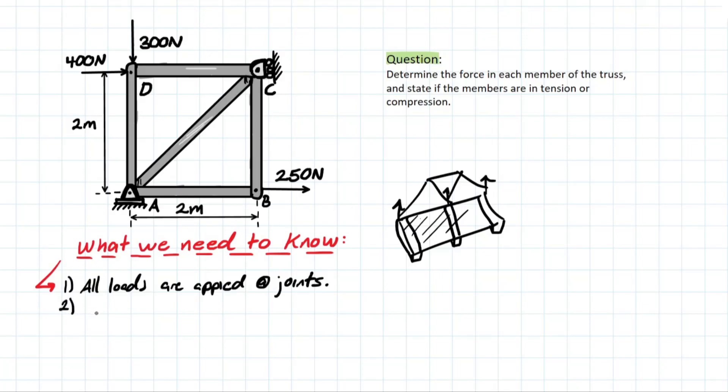And the second point that we need to understand is that members are joined at pins. And now these are both assumptions that we make. But this assumption here is just to ensure that the center lines are concurrent in these problems. And this also means that no moment reactions are created in general for these problems. And it makes sense because we don't want these members to be subject to any moment at all, if we can avoid it.